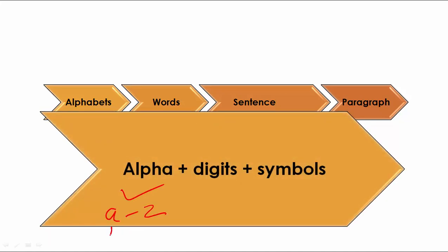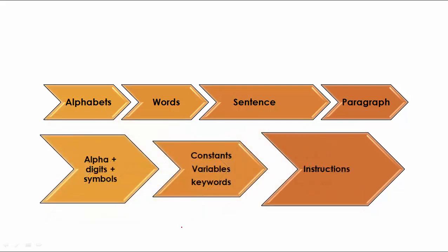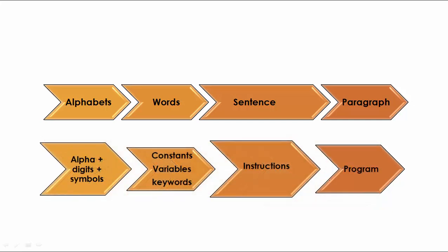Similarly, in a programming language we can use alphabets — A to Z small and capital, digits 0 to 9, and symbols like dot, less than, greater than, question mark, star, hash, underscore. This is our basic character set. Using that we can create constants, variables, and keywords, which we can use to make instructions and create programs.